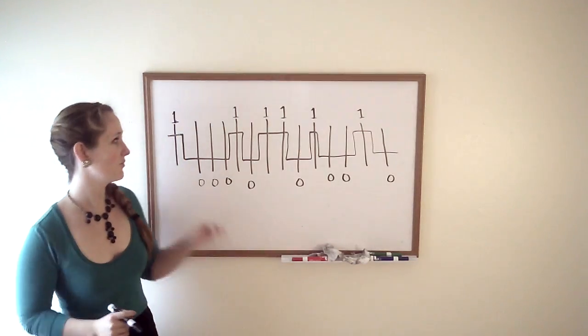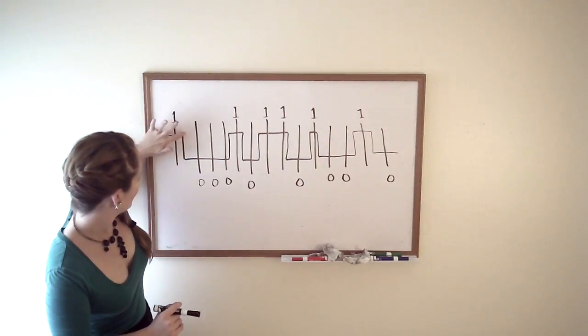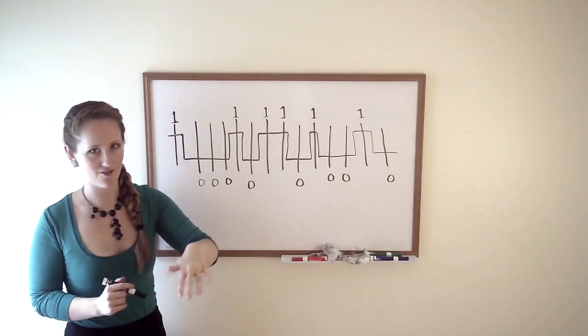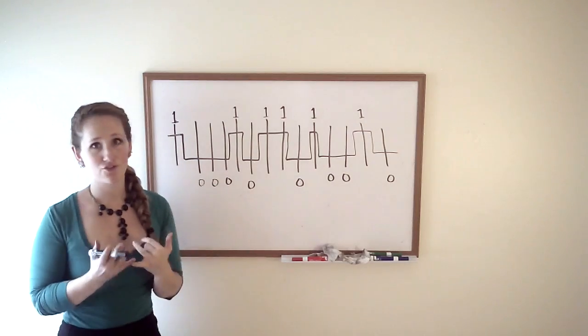All right, so this is an example of what a packet might look like. It's just this line that goes up and then down and up and down, and it's either up or it's down. That is an electrical current.